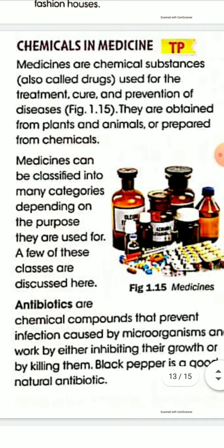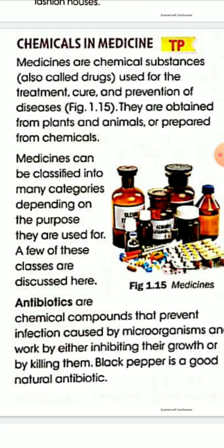The chemicals in medicines - all types of medicines are chemicals, so medicines are chemical substances, also called drugs. Medicines are used for treatment, cure, and prevention of disease. They are obtained from plants and animals, or prepared from chemicals. Medicines can be classified into many categories depending on the purpose they are used for.